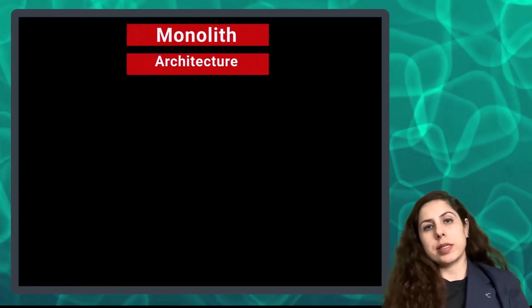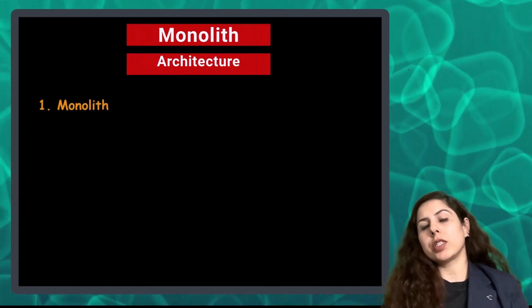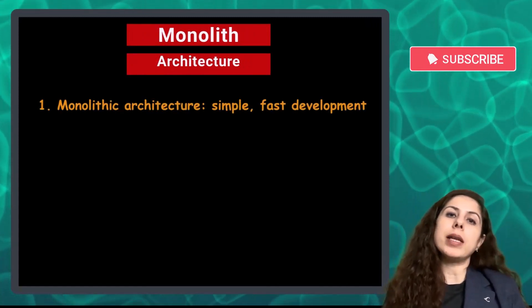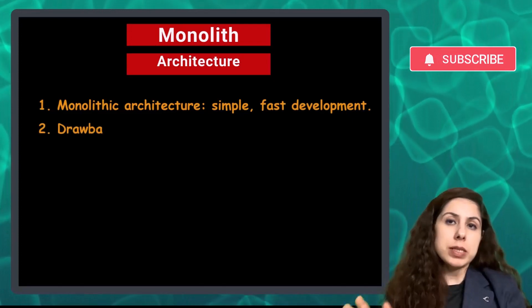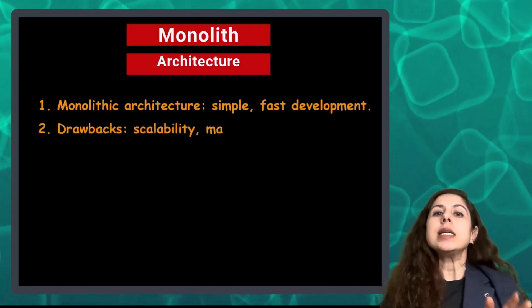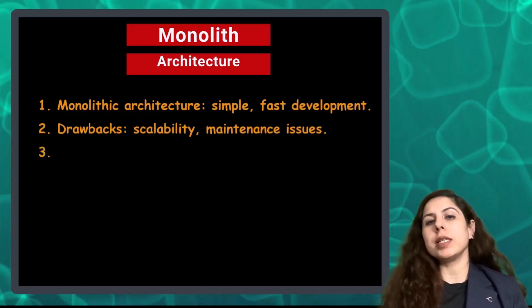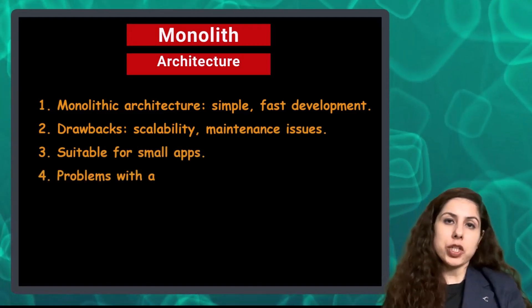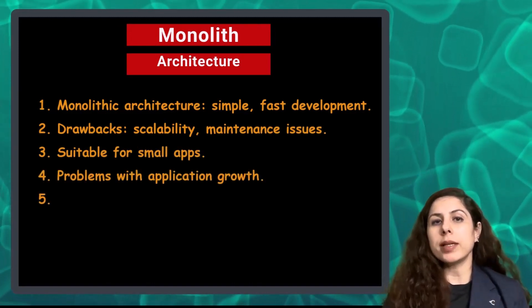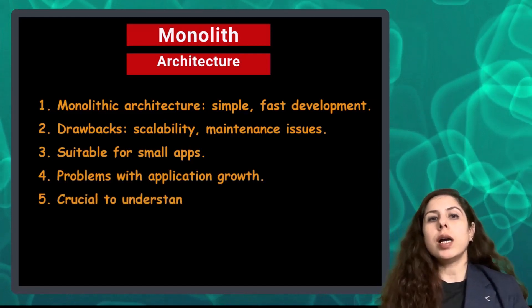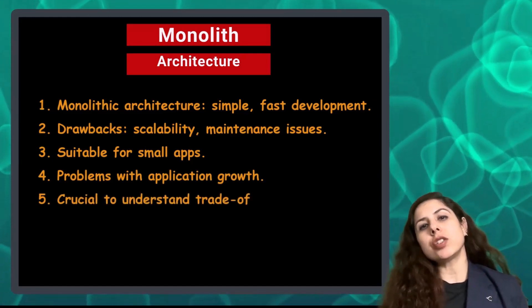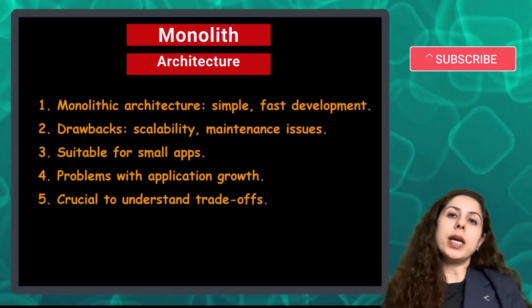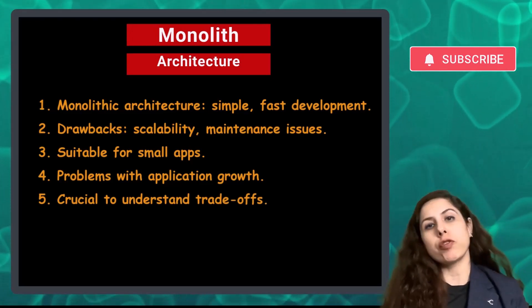In summary, while monolithic architecture has its benefits — especially in terms of simplicity and initial development speed — it also has significant drawbacks in scalability and maintenance. It is ideal for small, simple applications but can become problematic as the application grows. Understanding these trade-offs of monolithic architecture is crucial for making informed decisions in software architecture.